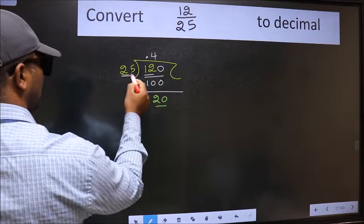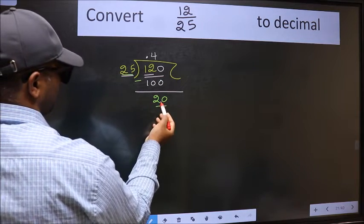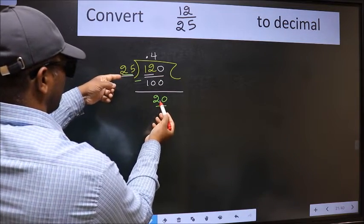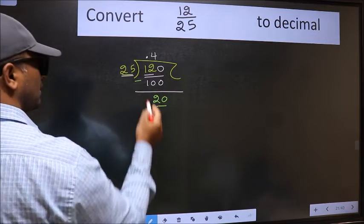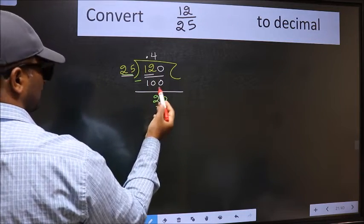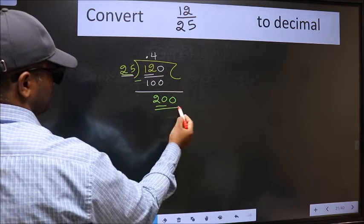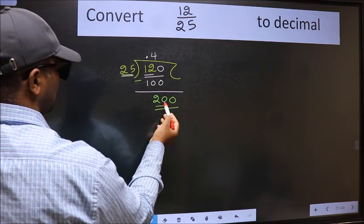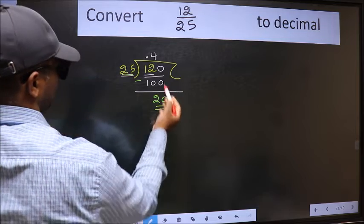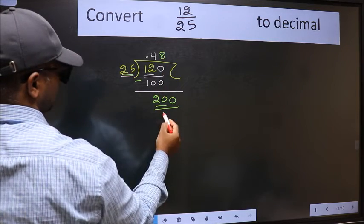Now here we have 20 and here 25. 20 is smaller than 25, and we already have the decimal. So this time we can directly take 0. So 200. When do we get 200 in the 25 table? 25 times 8 is 200.